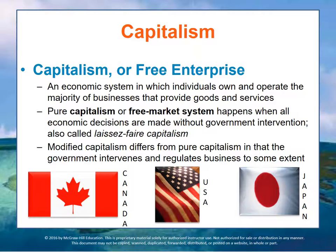There are really two kinds of capitalism. In pure capitalism — the so-called free market system — all economic decisions are made without government intervention. This was described by Adam Smith in the Wealth of Nations. He is considered the father of capitalism, who said that the invisible hand of competition best guides the economy.